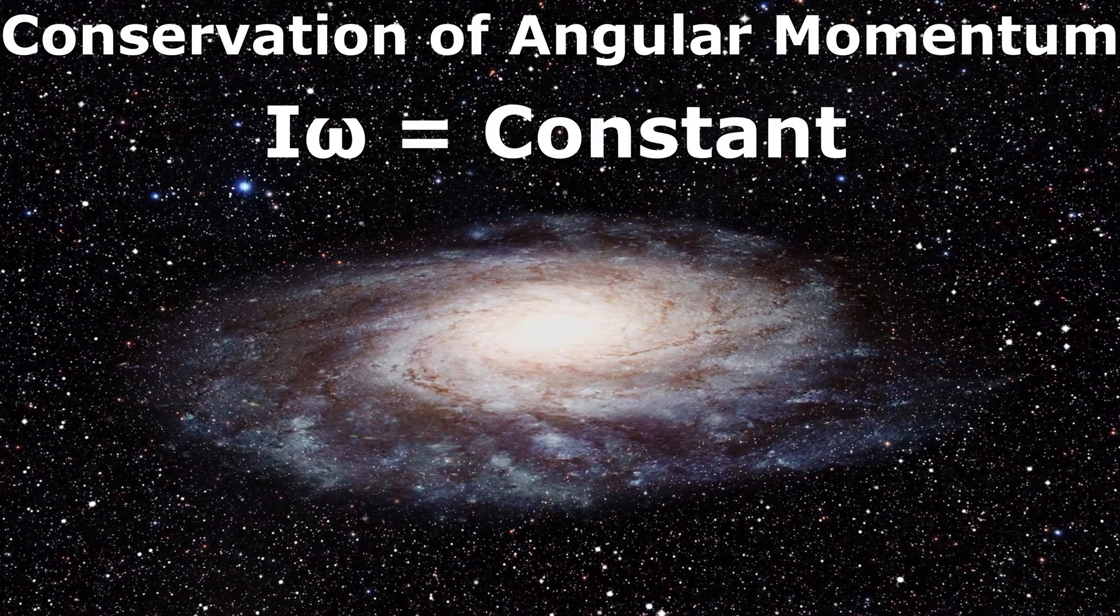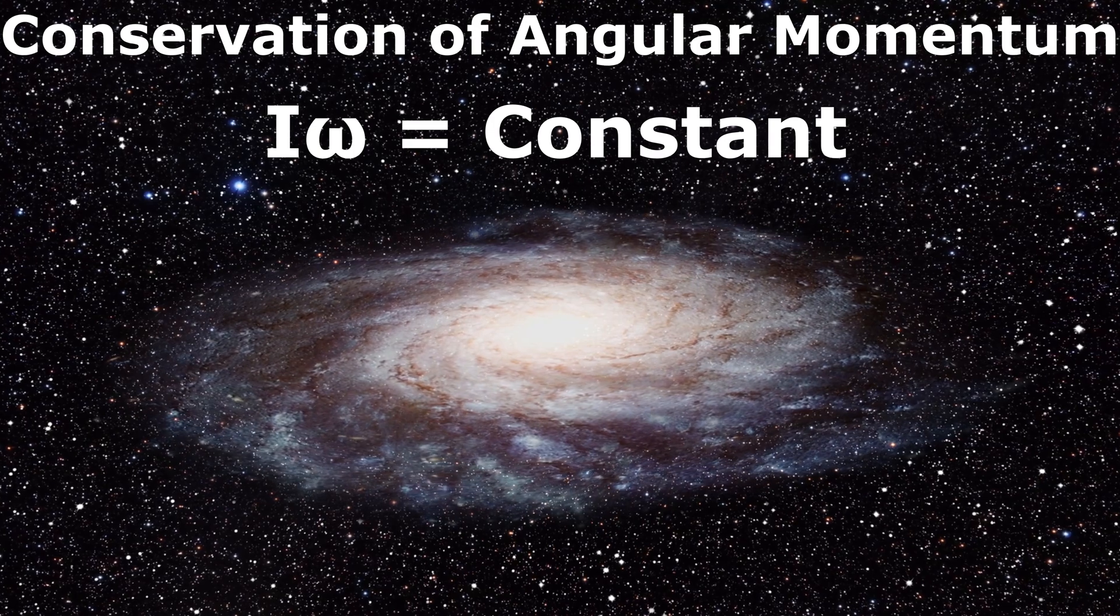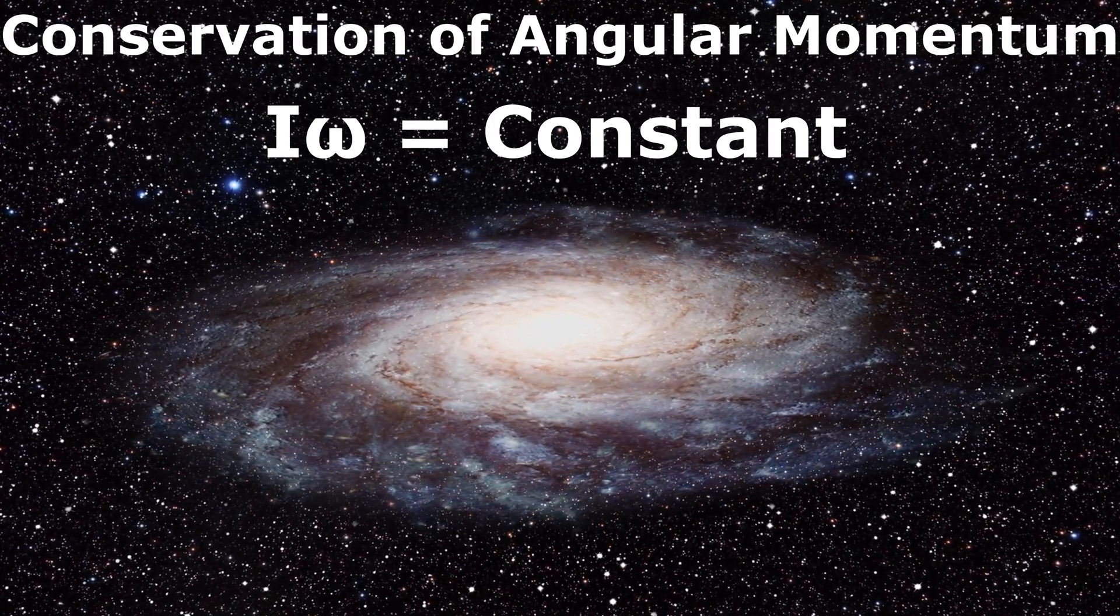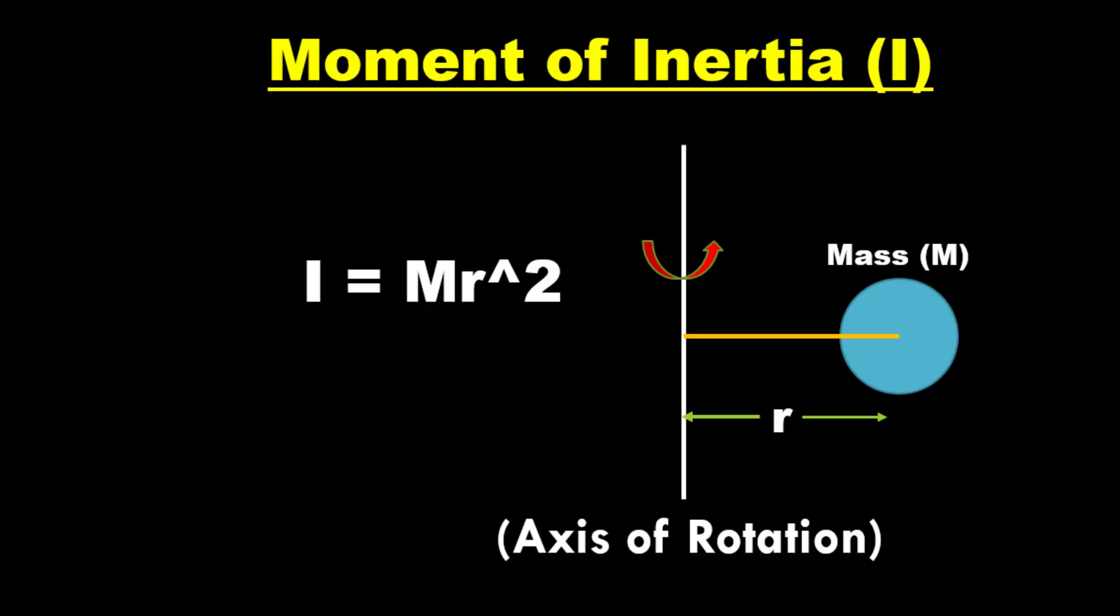According to the principle of conservation of angular momentum, I multiplied by omega is constant. Here, moment of inertia, denoted by I, is the product of the mass of the object and square of its perpendicular distance from the axis of rotation.